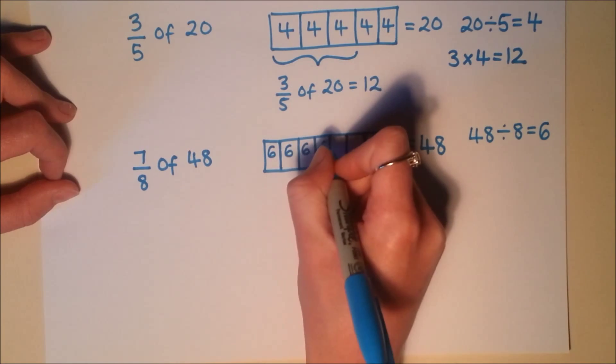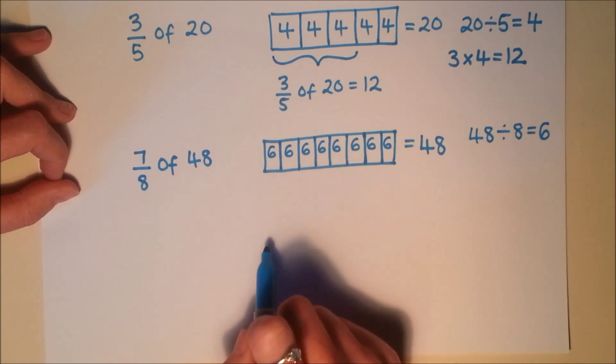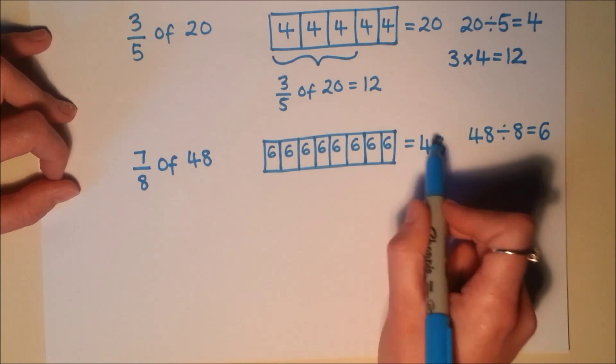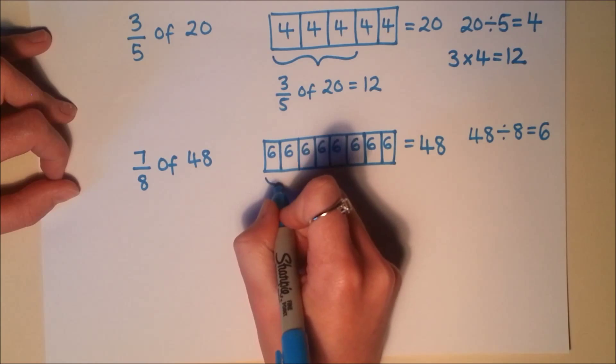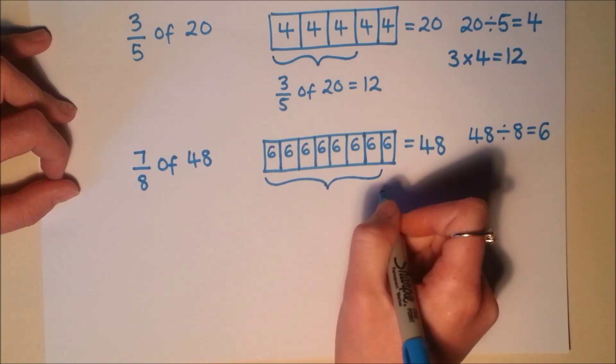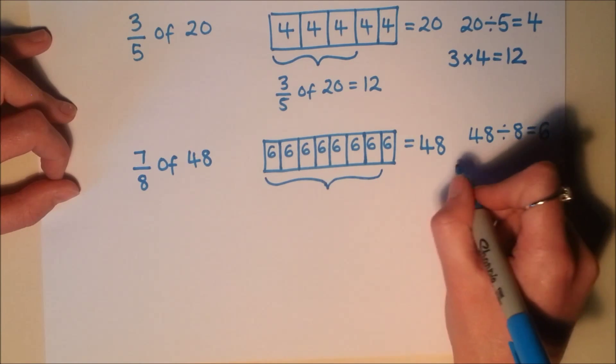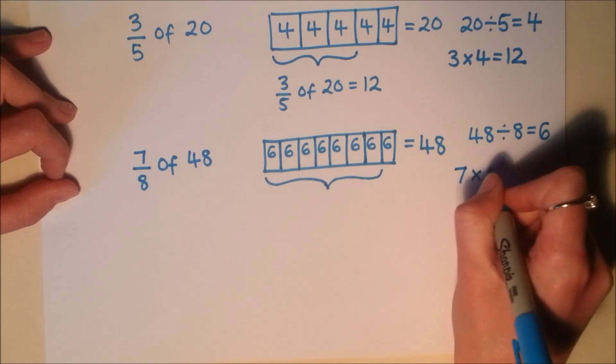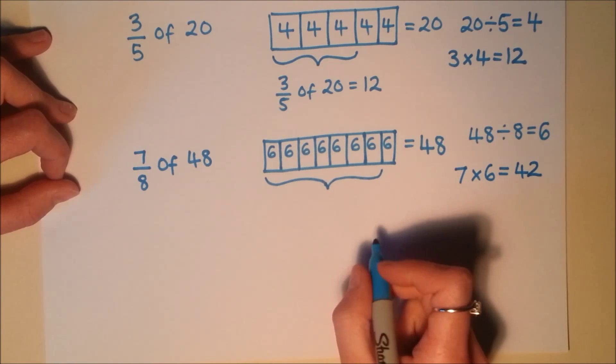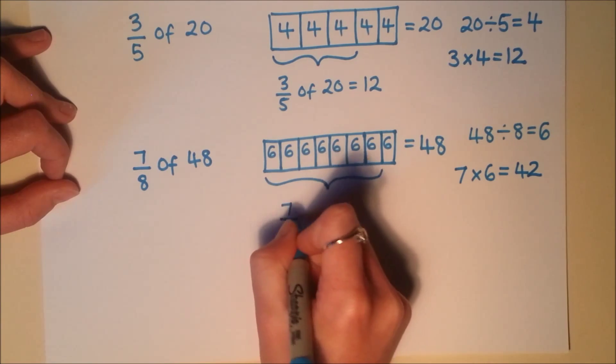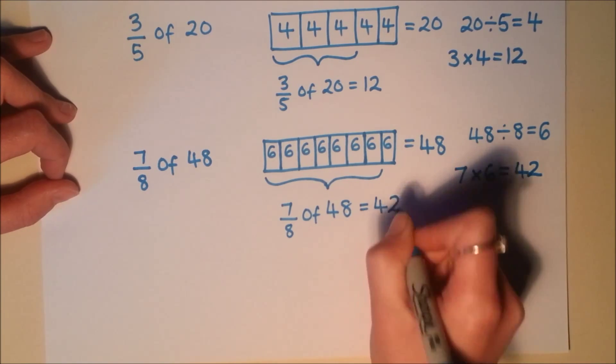So each one of these shares is worth 6. And you can see we've got 8 lots of 6 there to make 48. Then look at the numerator. I need 7 of these pieces. So I'm going to need all of these to here. So I'm going to be working out how many lots of 6 I've got here. Well, I've got 7 lots of 6. So I'm going to do 7 lots of 6. Work that out using your times tables. That's 42. So I know 7 eighths of 48 is 42.